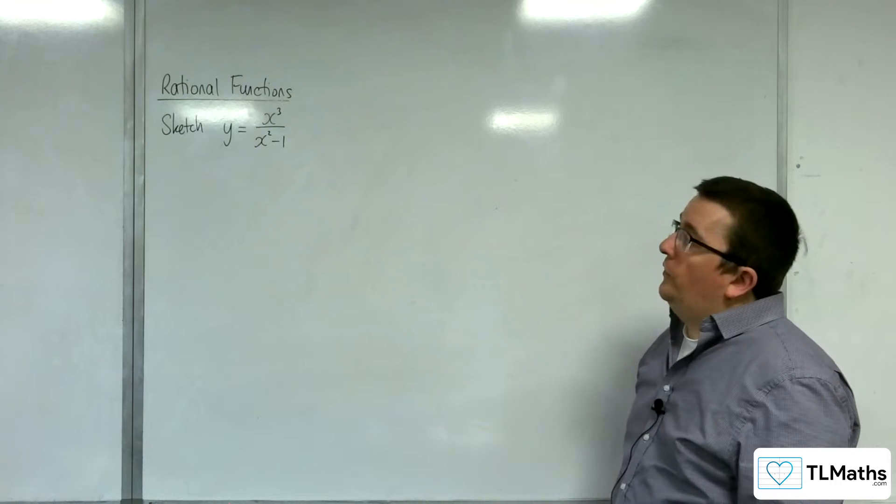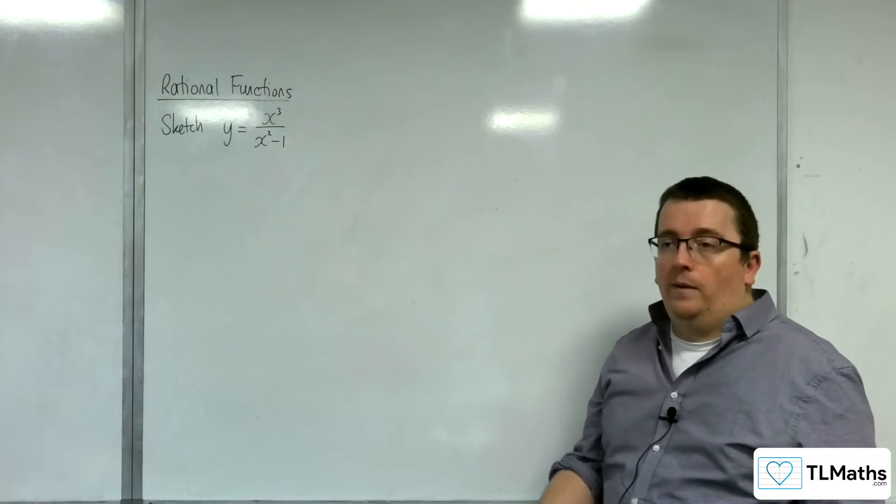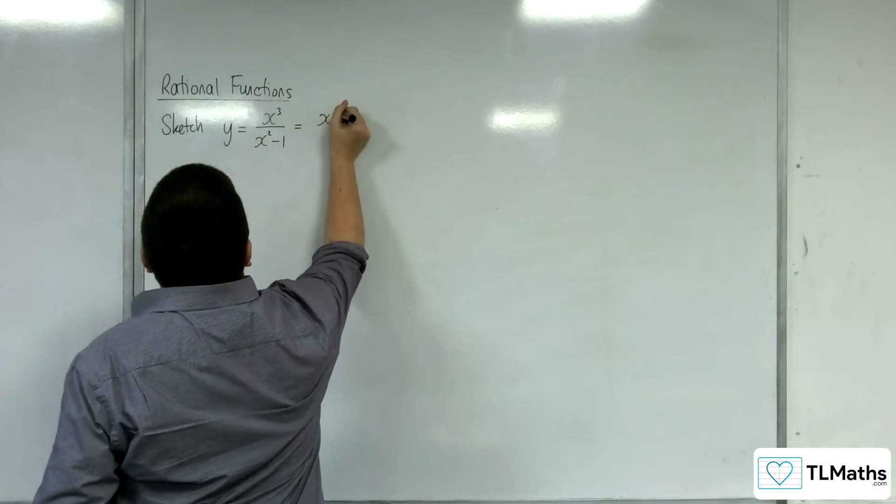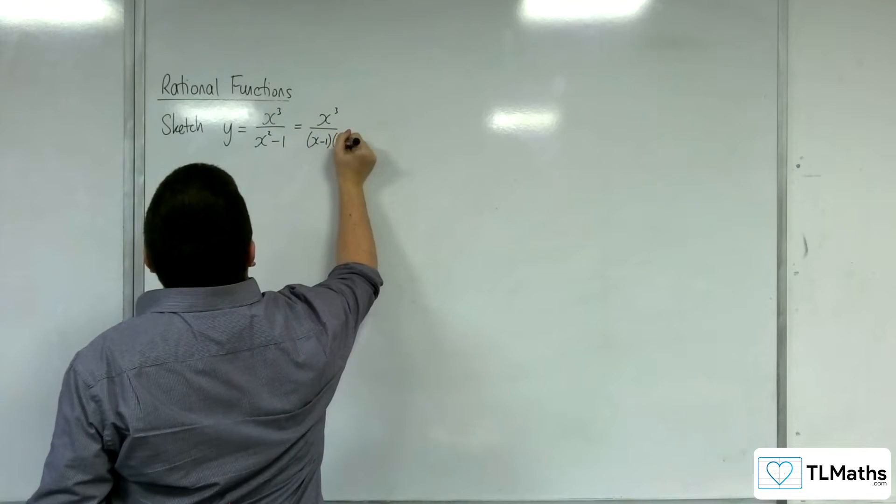In this video we're going to sketch y = x³/(x² - 1). That denominator can be factorized, so we've got x³ over (x - 1)(x + 1).